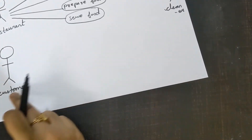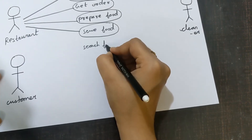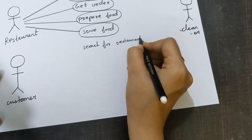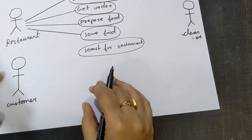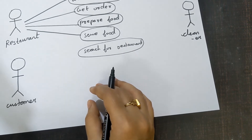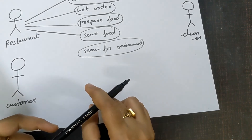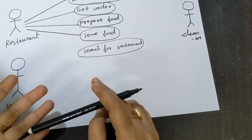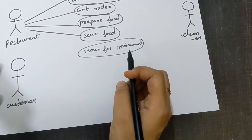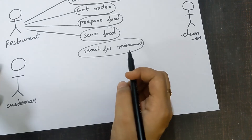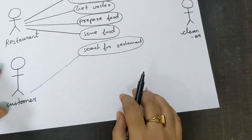Next, let us look into the use cases for the actor customer. Customer can search for the restaurants — there are many restaurants and they might not know most of them. When they want to try some new restaurants, they search and get to know other restaurants in their city. So the customer can search for restaurants and choose the best one, joining this with a connector line.